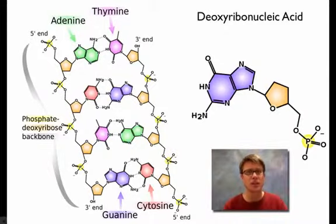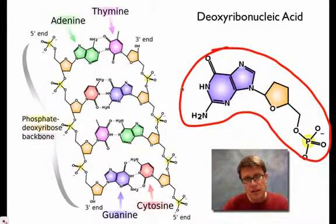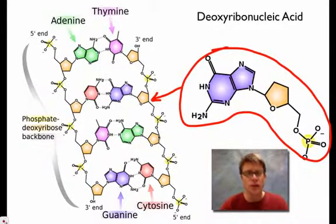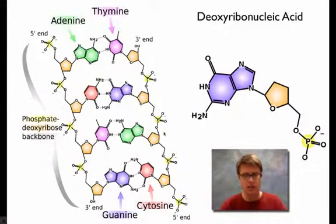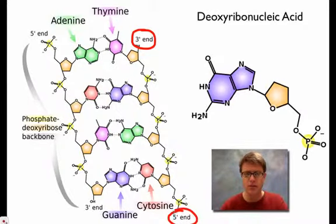Now this is maybe a little more familiar when looking at the structure of DNA. The nucleotide we just went over is found right here. One more thing to mention: if you look at DNA, there's a 3 prime end and a 5 prime end. What does that mean? Well, that's going to refer to the sugar itself.